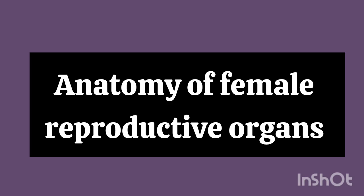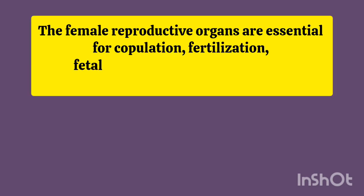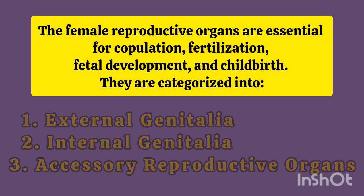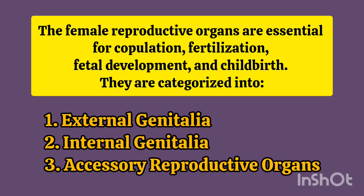Anatomy of Female Reproductive Organs. The female reproductive organs are essential for copulation, fertilization, fetal development, and childbirth. They are categorized into: 1. External Genitalia, 2. Internal Genitalia, 3. Accessory Reproductive Organs.